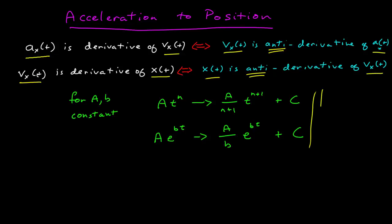Just as a reminder of the most trivial anti-derivatives: if I have capital A and small b as constants, if I have some polynomial t to the n, the anti-derivative of that is the constant over n plus 1, times t to the n plus 1, plus an additive constant.